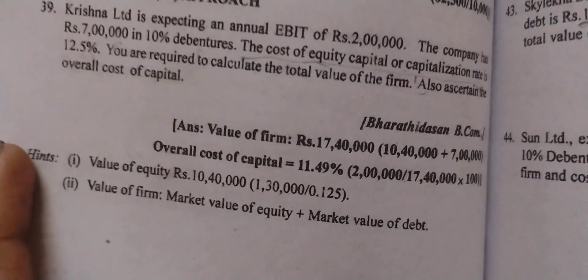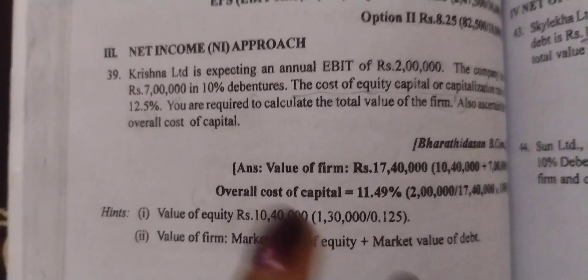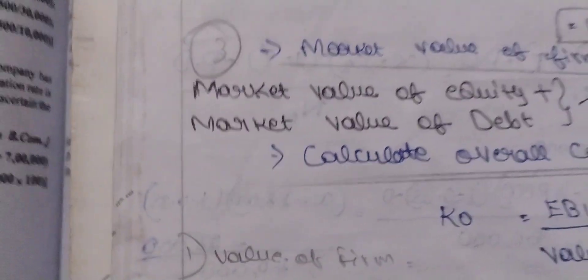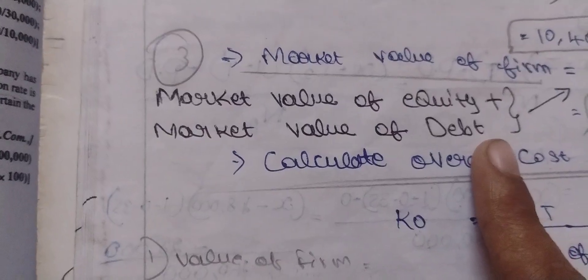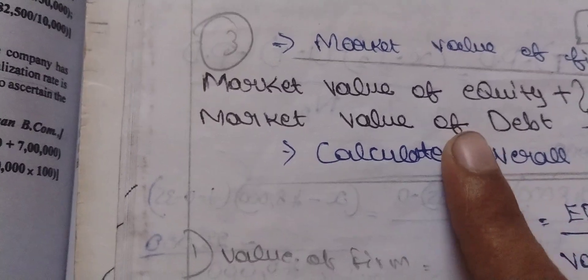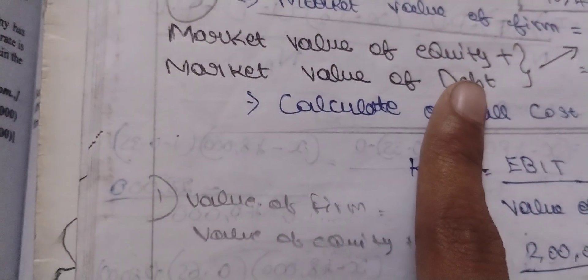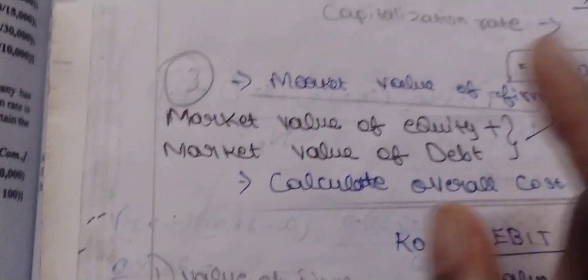The market value of firm is calculated using the formula: Market value of equity plus market value of debt equals value of firm. We need to find the market value of debt and equity for the business.